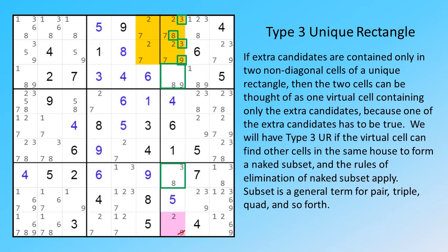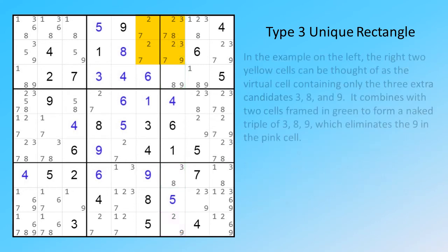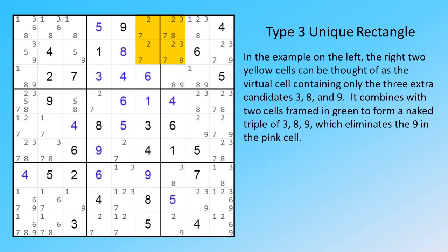Subset is a general term for pair, triple, quad, and so forth. In the example on the left, the right two yellow cells can be thought of as the virtual cell containing only the three extra candidates 3, 8, and 9. It combines with two cells framed in green to form a naked triple of 3, 8, and 9, which eliminates the 9 in the pink cell.